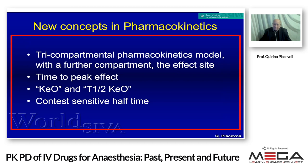What are the new concepts in pharmacokinetics? First: the three-compartmental pharmacokinetic model with a further compartment called the effect site. Second: time to peak effect. Third: KE0 and T-half-KE0. Fourth: context-sensitive half-time. All these new concepts are very important because after they were introduced for intravenous anesthesia, inhalation anesthesia also adopted them, as the dynamics are similar.